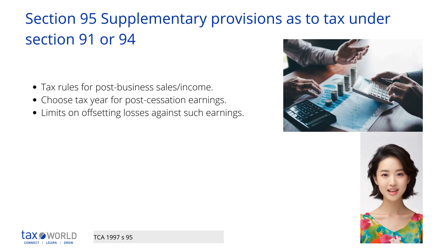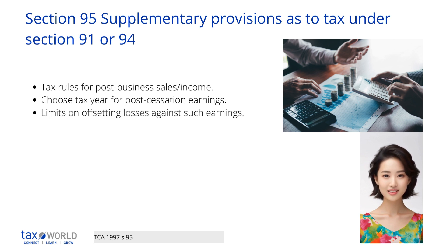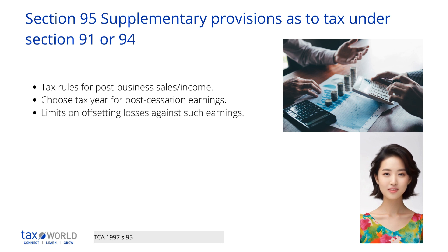Hi there, it's Azealia here from TaxWorld. Today I'd like to talk to you about Section 95 of the Taxes Consolidation Act 1997. Section 95 sets out additional rules in relation to post-cessation receipts and the conventional basis.